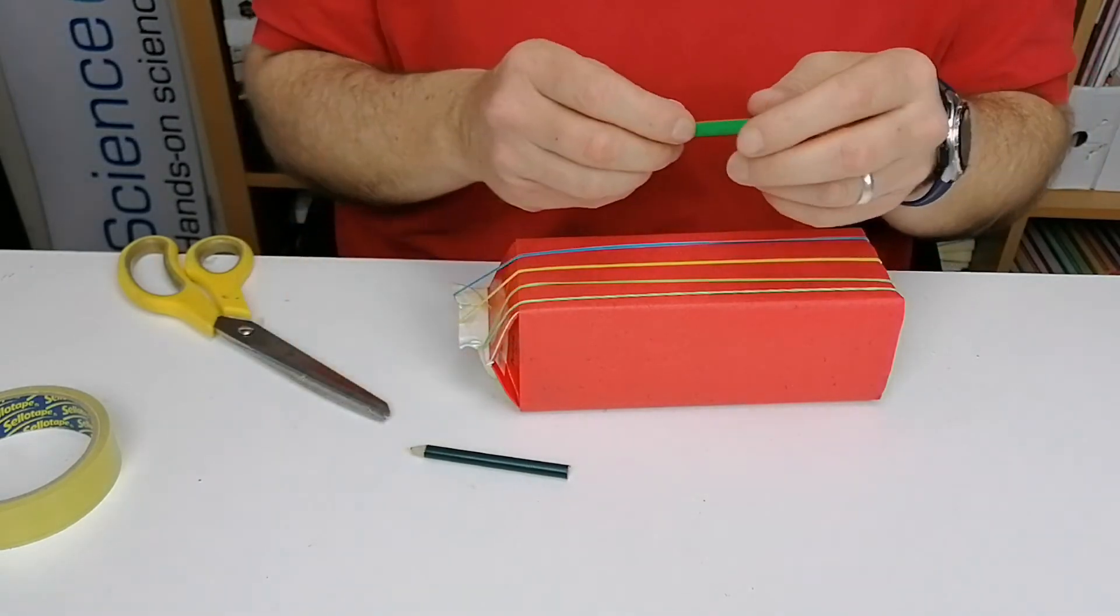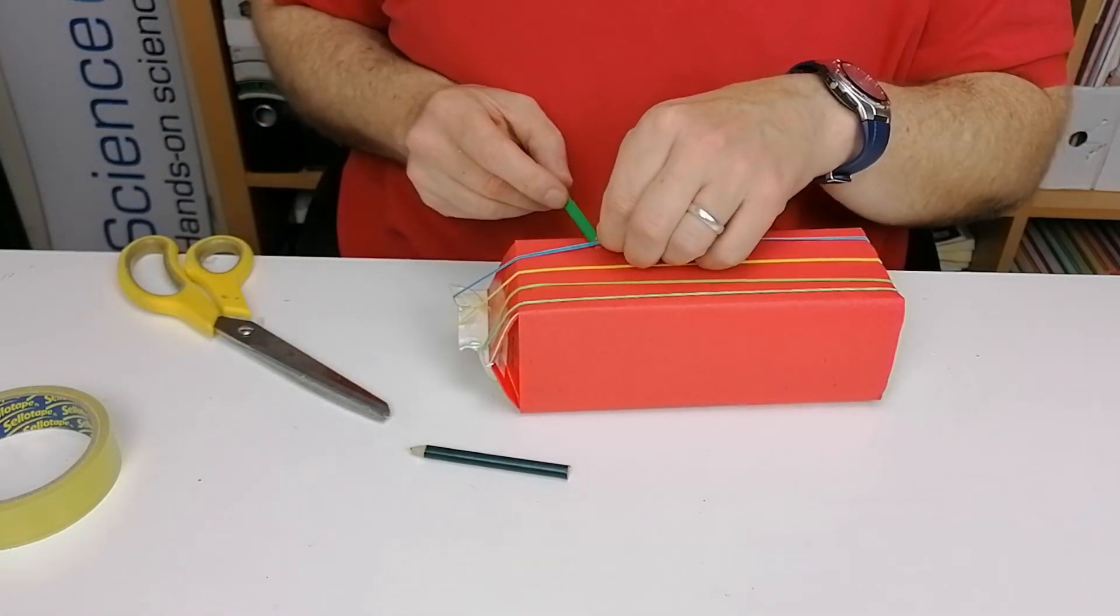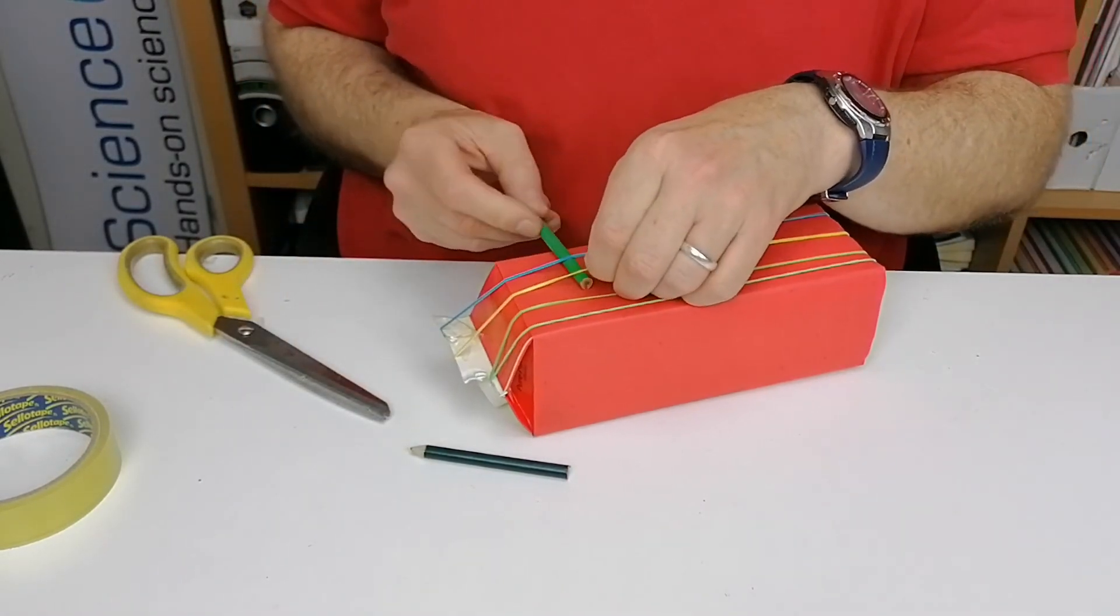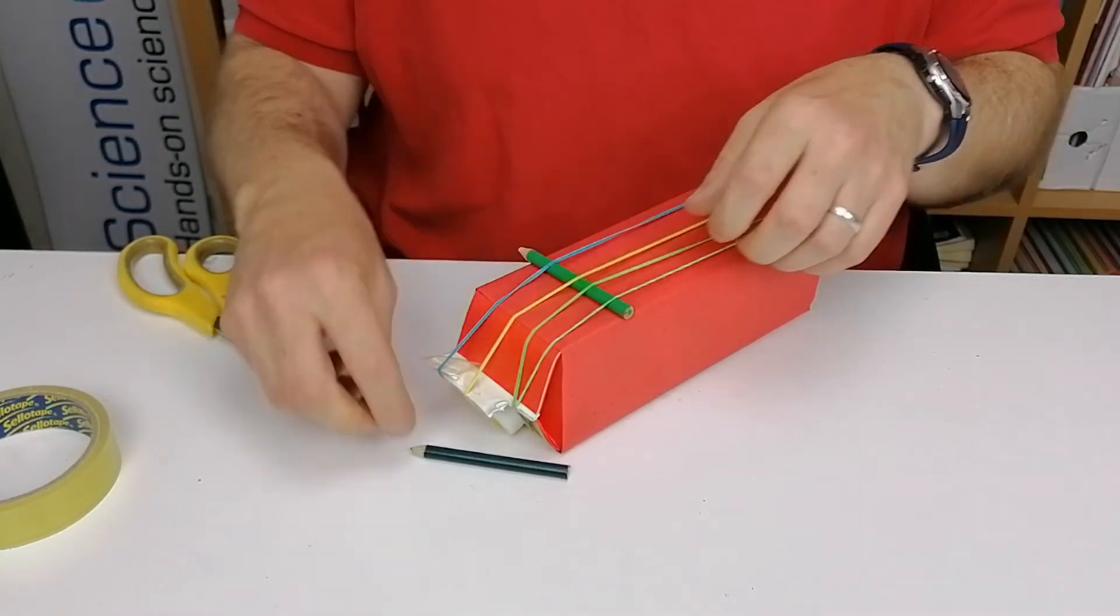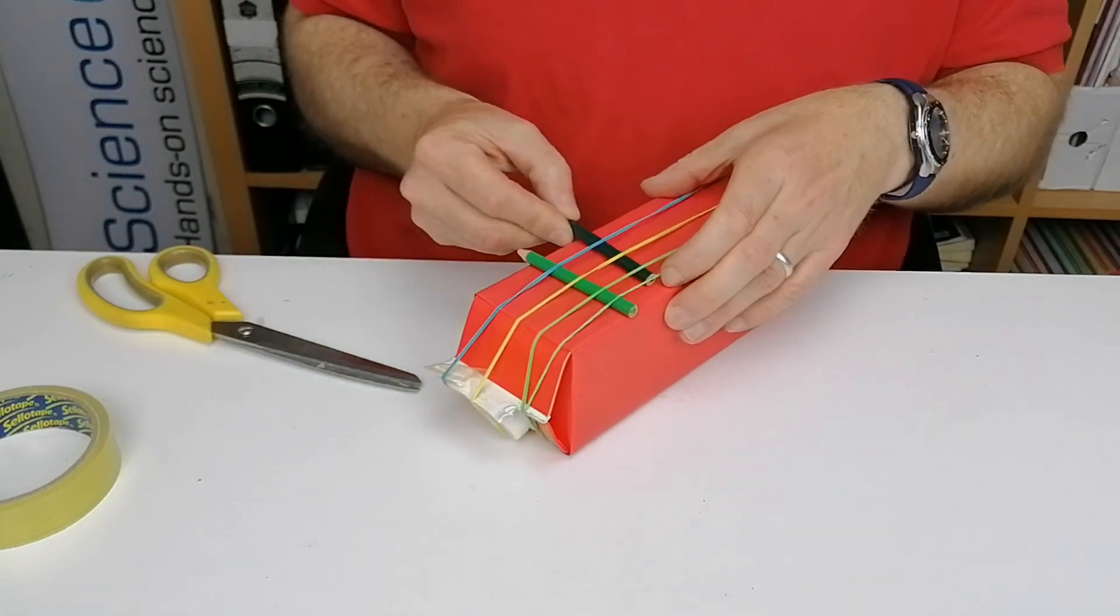So what you need to do now is add two small pencils and they are like a bridge that you'd have in a guitar or a violin there and here.